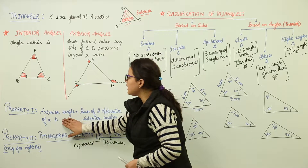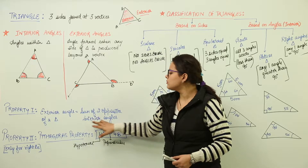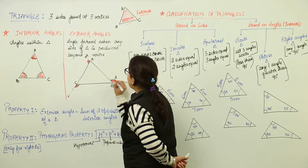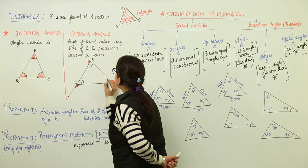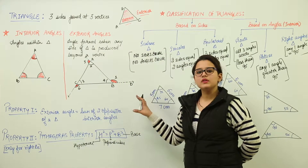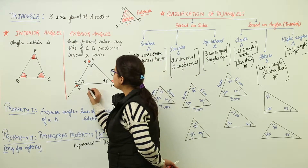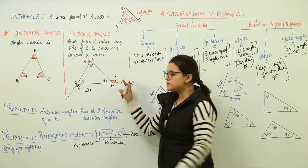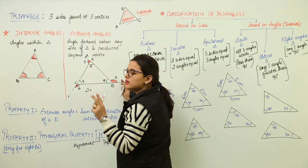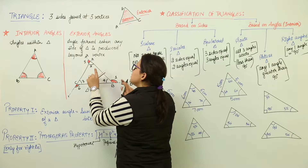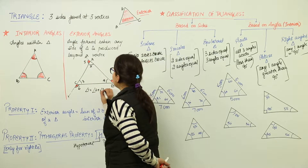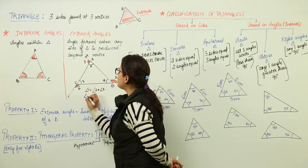Now we have the property which says that an exterior angle of a triangle is always equal to the sum of the two opposite interior angles. I will name the angles as one, two, three, four, five, and six, naming all the interior and exterior angles. If I want to write the measurement of angle one, which is the exterior angle, as per the property, it is equal to the sum of the two opposite interior angles — which would be angle two and angle three. So angle one equals angle two plus angle three.